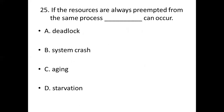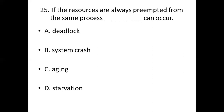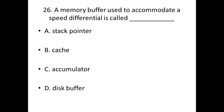Twenty-fifth bit. If the resources are always preempted from the same process, dash can occur. Option A: Deadlock. Option B: System crash. Option C: Aging. Option D: Starvation. Answer: Option D, Starvation.